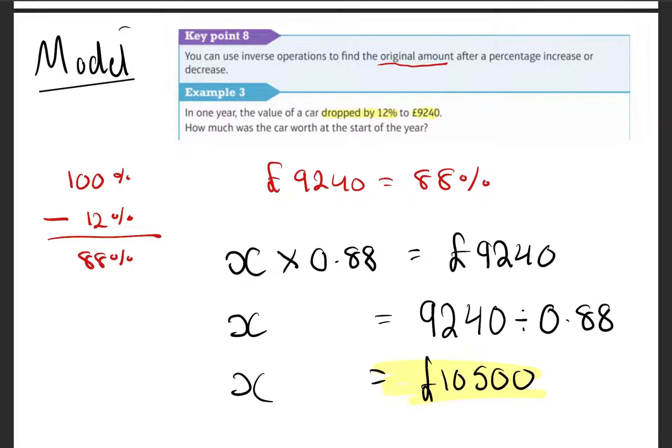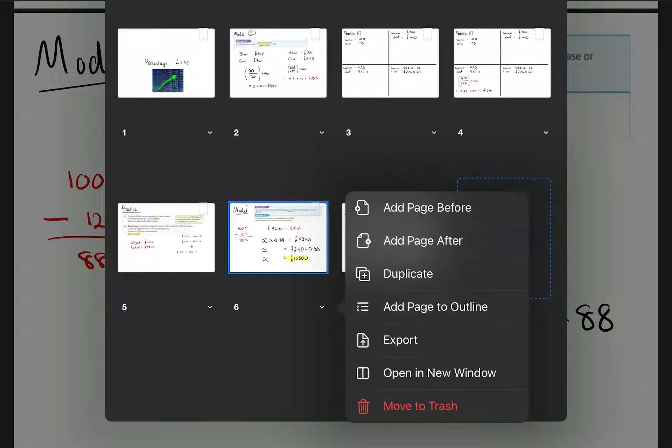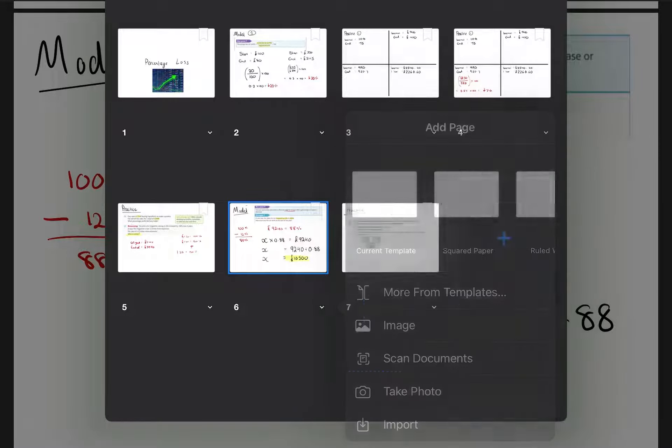Okay, let's do one more, just for good luck. I bought a bike, and after a year it's dropped by 30%, and now it's worth £6,200. So, final value... what's my original amount?